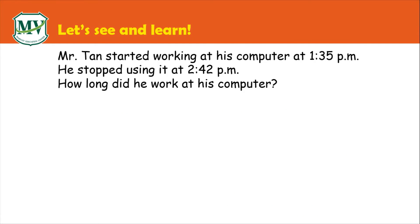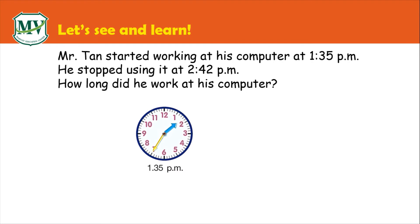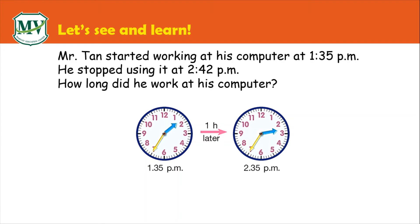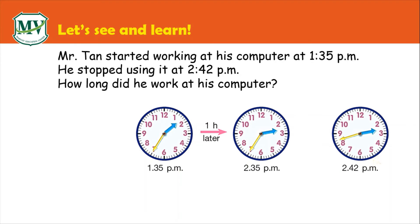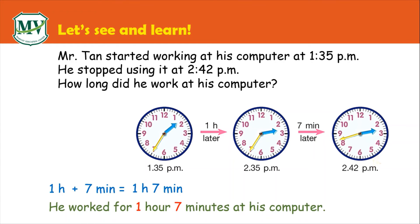How about this one? Mr. Tan started working at his computer at 1:35 p.m. He stopped using it at 2:42 p.m. How long did he work at his computer? Remember, we are going to do this hour by hour. From 1:35 p.m. to 2:35 p.m. is 1 hour. He stopped at 2:42 p.m., so from 2:35 p.m. to 2:42 p.m. is 7 minutes. Then, 1 hour plus 7 minutes equals 1 hour and 7 minutes. So, he worked for 1 hour 7 minutes at his computer.